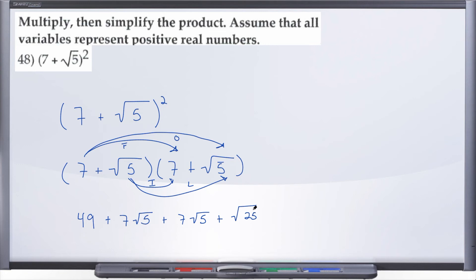And then let's go ahead and clean this up a little bit. We have 49, we can now add these two together because we have identical radicals, and when we have identical radicals that makes these two terms like terms.